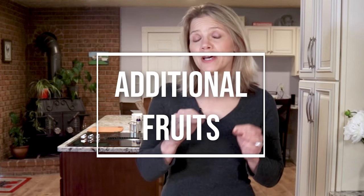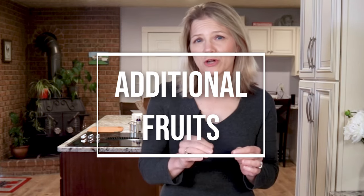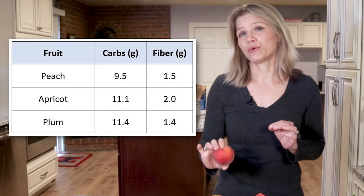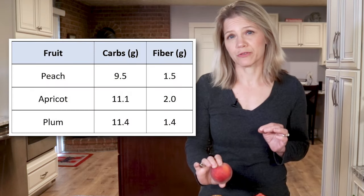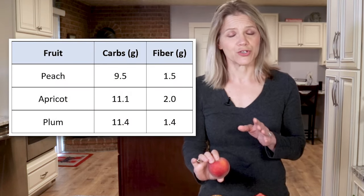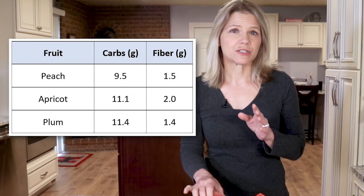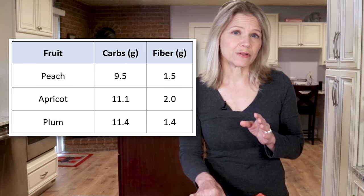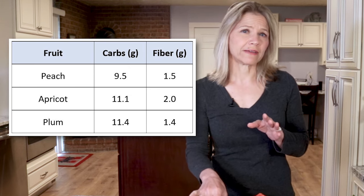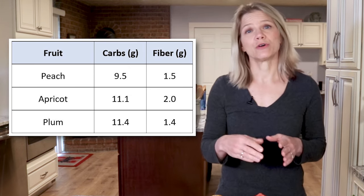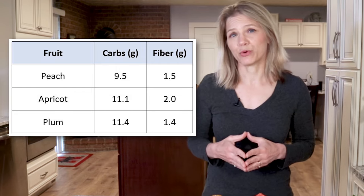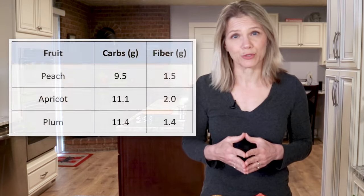To round out our list, let's look at some additional fruits and rank them from the most low-carb friendly to the least. Peaches start our list with 9.5 grams of carbs, 1.5 of which are fiber. Apricots are also reasonably low in carbs with just over 11 grams, as are plums, which have 11.4 grams per serving.